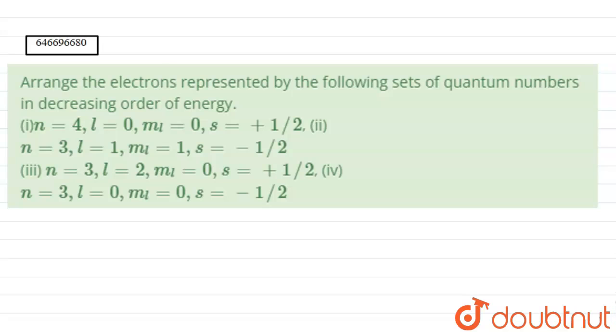Hello students, in the given question, we have been asked to arrange the electrons represented by the following set of quantum numbers in decreasing order of energy.